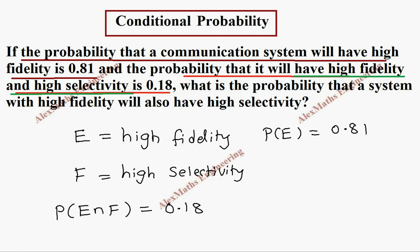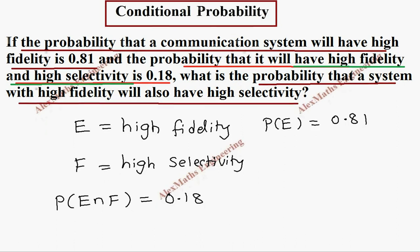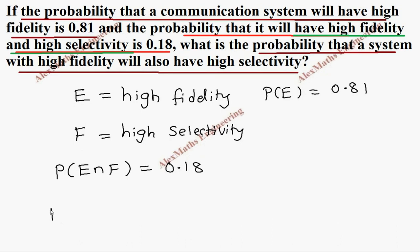Now they are asking what is the probability that a system with high fidelity will also have high selectivity. So what they are asking us to find is P of what they are asking, which will come in the numerator part, and what we already know comes in the denominator part. So here they ask what is the probability that the system with high fidelity will also have high selectivity.